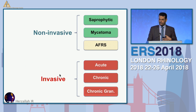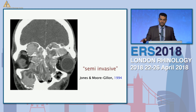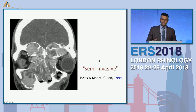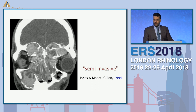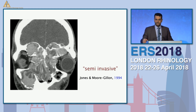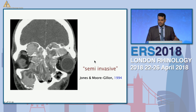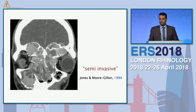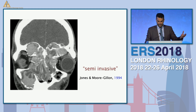The invasive forms include acute, chronic, and chronic granulomatous invasive. There was a term in the 90s referred to as semi-invasive, applied to extensive allergic fungal rhinosinusitis cases that seemed truly invasive. But by the time we better understood the pathology, we recognized these are just extensive allergic fungal rhinosinusitis cases requiring endoscopic management and different approaches for medical management.